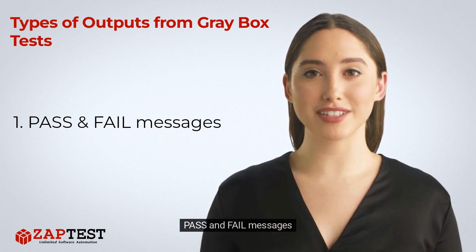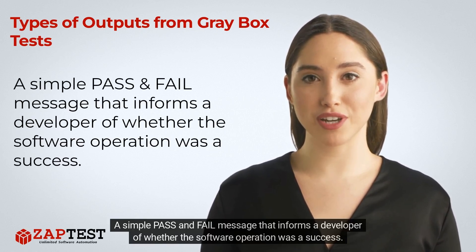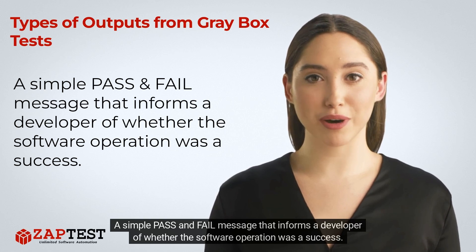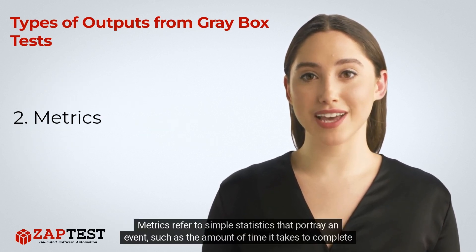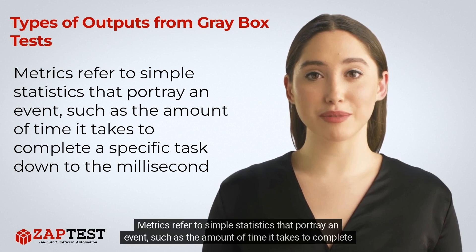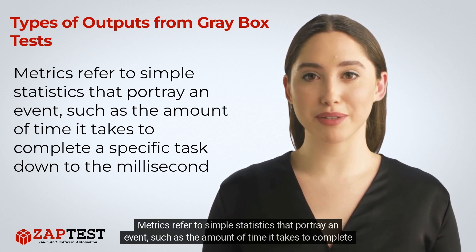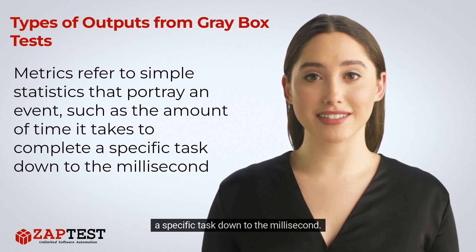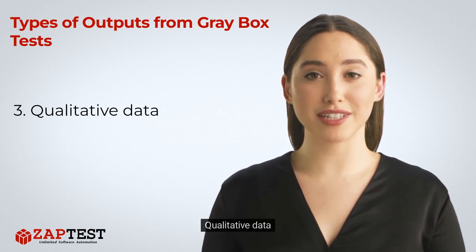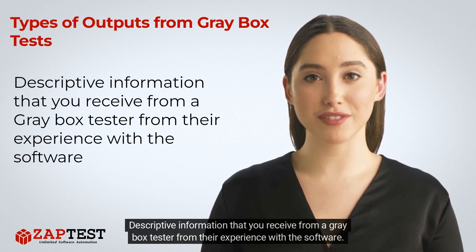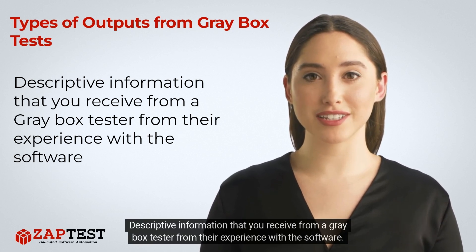The main types of output are: 1. Pass and Fail Messages — a simple pass and fail message that informs a developer of whether the software operation was a success. 2. Metrics — simple statistics that portray an event, such as the amount of time it takes to complete a specific task down to the millisecond. 3. Qualitative Data — descriptive information that you receive from a gray box tester from their experience with the software.